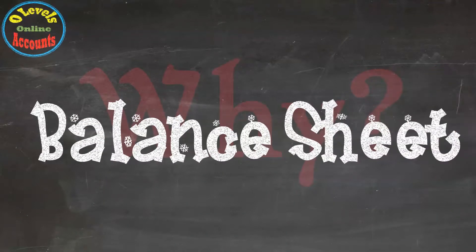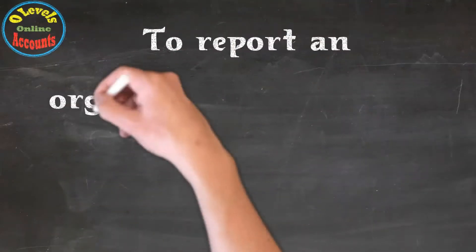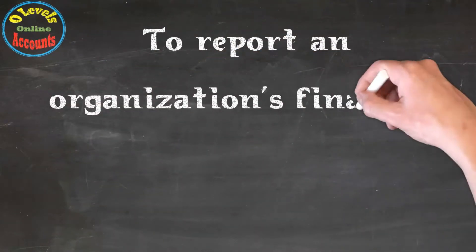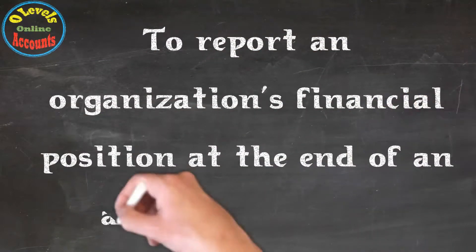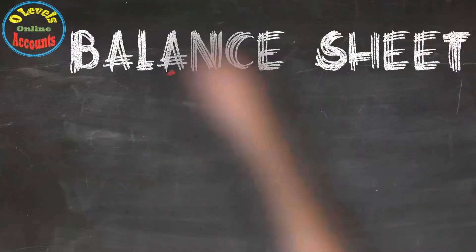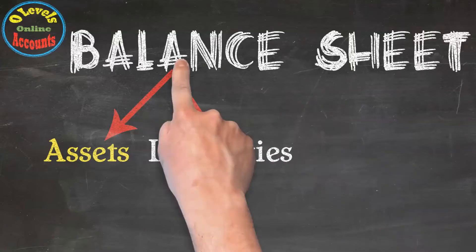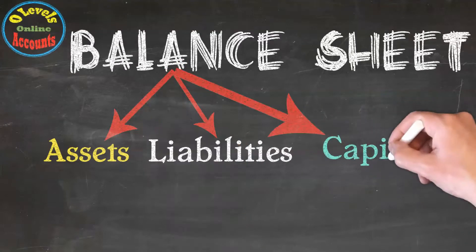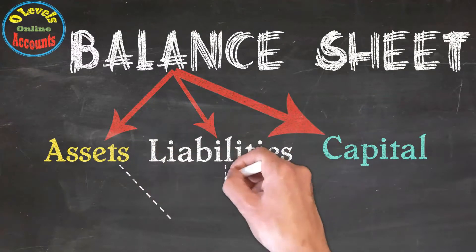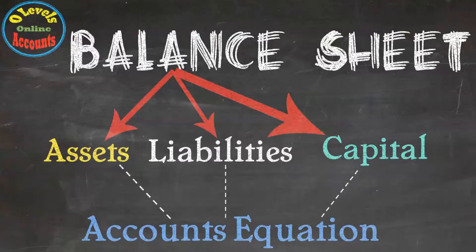Why balance sheet? To report an organization's financial position at the end of an accounting period. The balance sheet has three components: assets, liabilities, and capital. All of them are associated with the accounting equation. We can say that a balance sheet is another shape of the accounting equation.